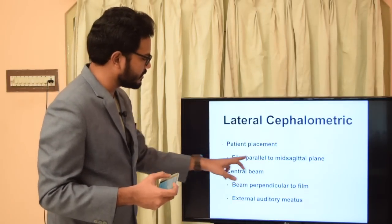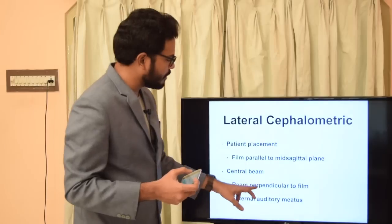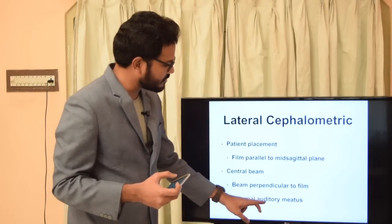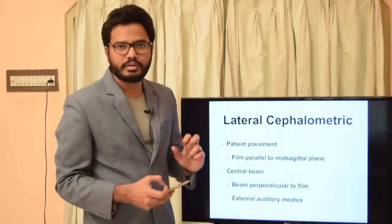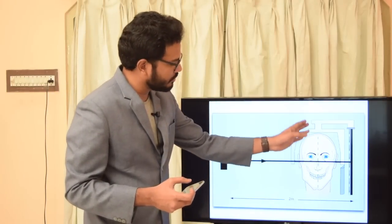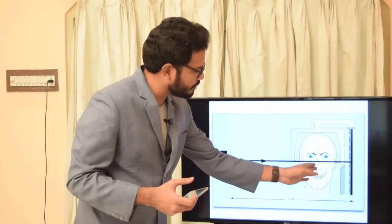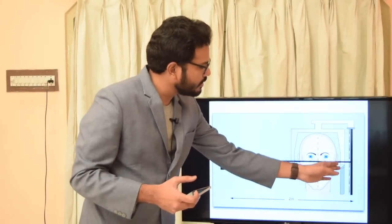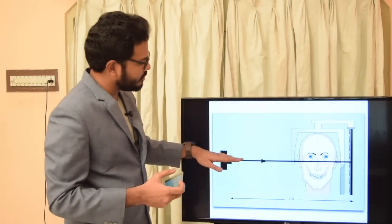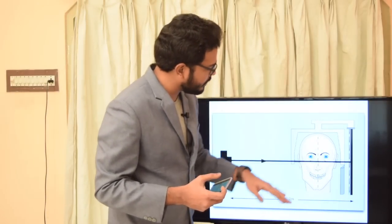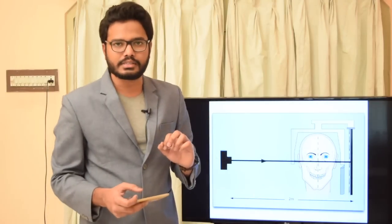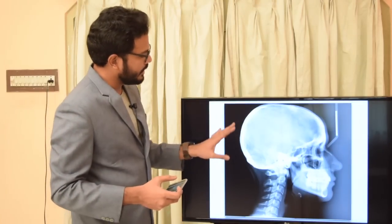The central x-ray beam has to be perpendicular to the film and directed towards the external auditory meatus. The mid-sagittal plane of the patient should be parallel to the x-ray film, and the central beam of x-ray should be projected perpendicular to the film directed towards the external auditory meatus.